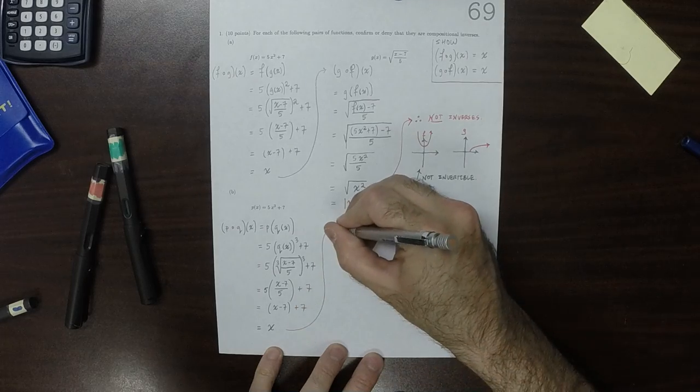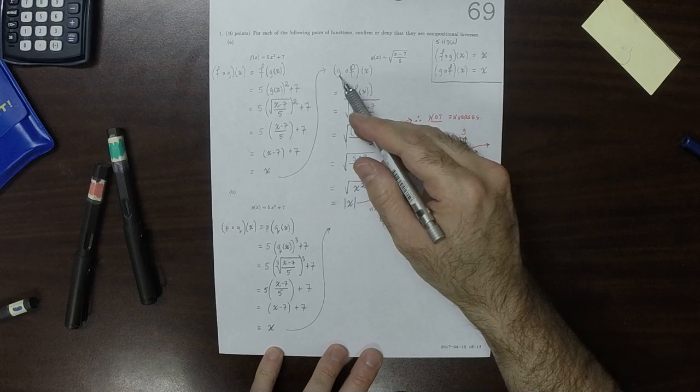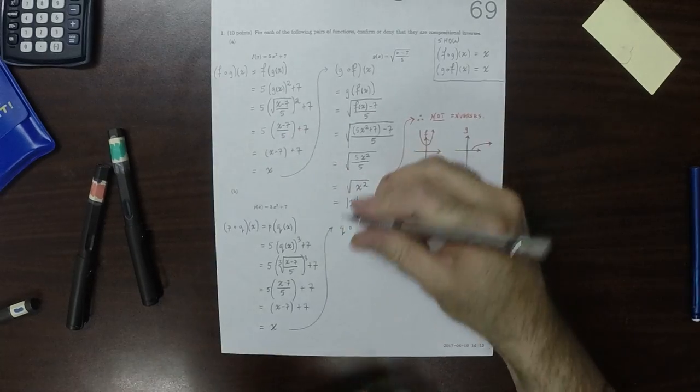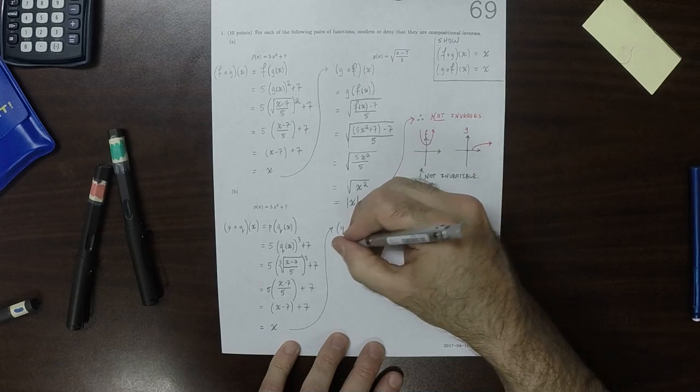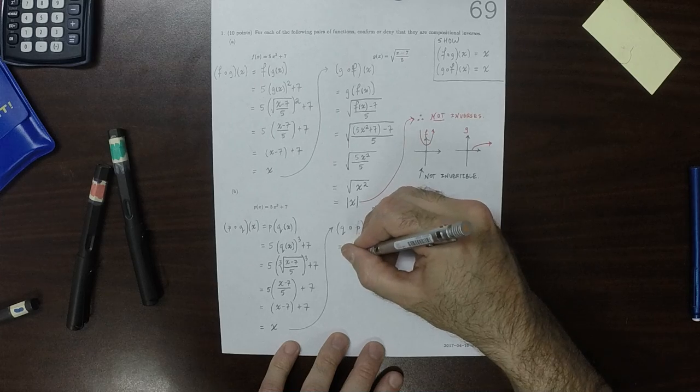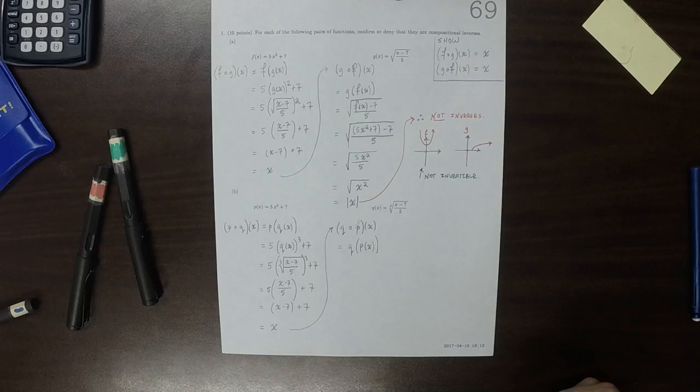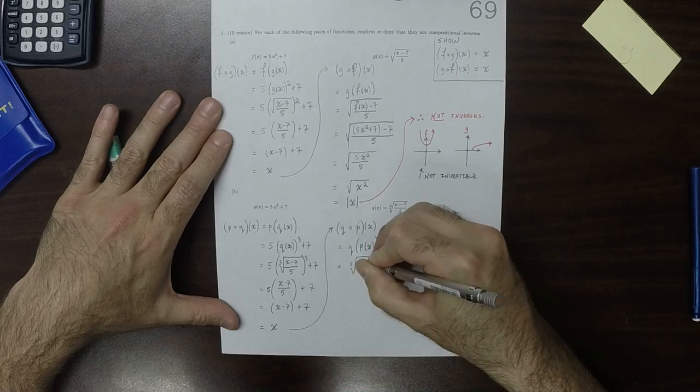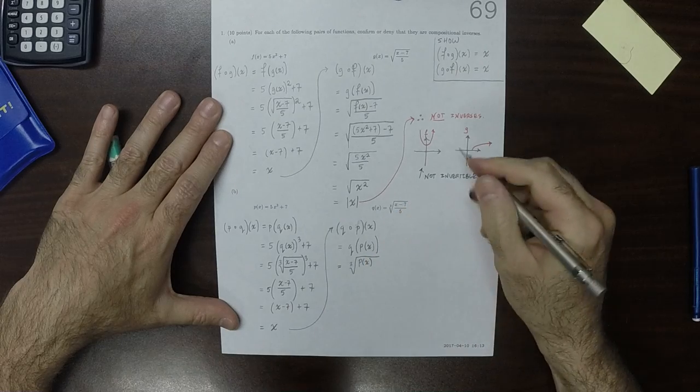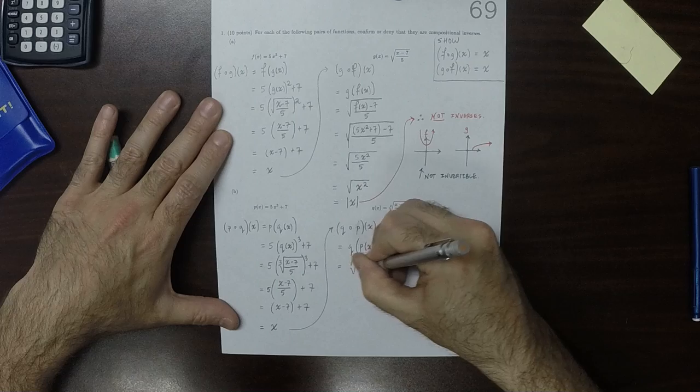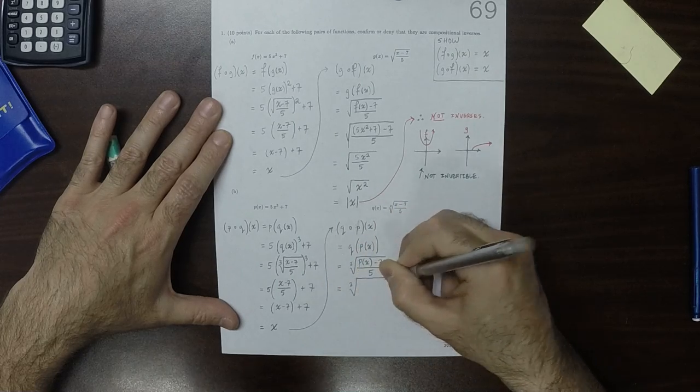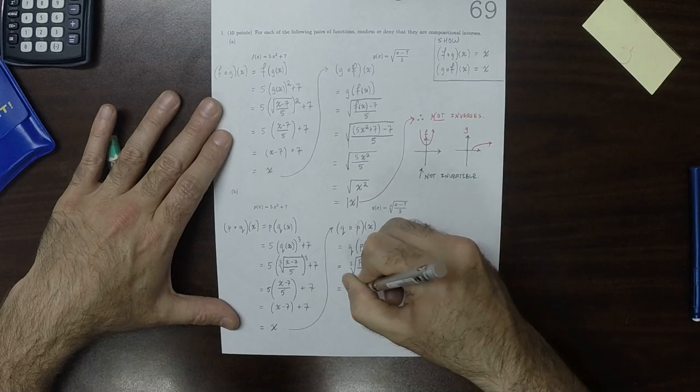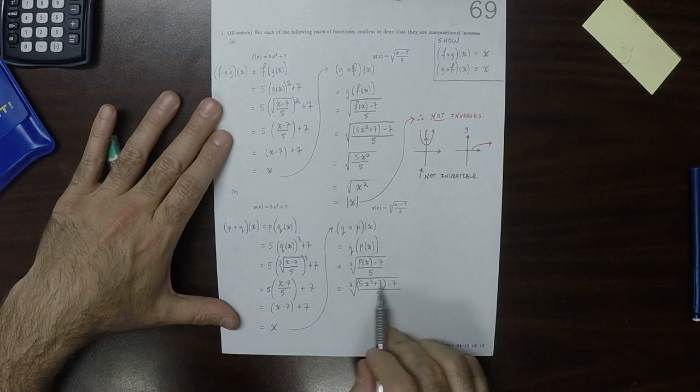However, now's where things get a little different, and that is when we do q circ p evaluate at x. Well that's q of p of x, and that is the cube root of p of x minus 7 over 5, which is the cube root of 5x cubed plus 7 minus 7 over 5. So now the 7s cancel.